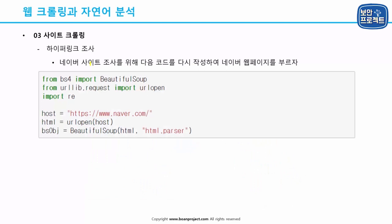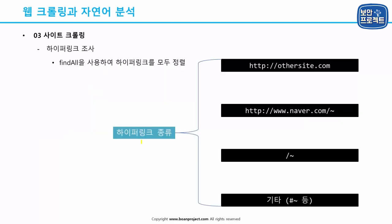하이퍼링크 조사 - 네이버 사이트 조사를 위해 다음 코드로 네이버 웹페이지를 불러옵니다. 이 네이버 웹페이지에는 하이퍼링크의 종류가 4가지가 있습니다. 첫 번째로는 다른 사이트들로 연결되는 링크들이 있고, 이것들은 HTTP로 시작합니다.